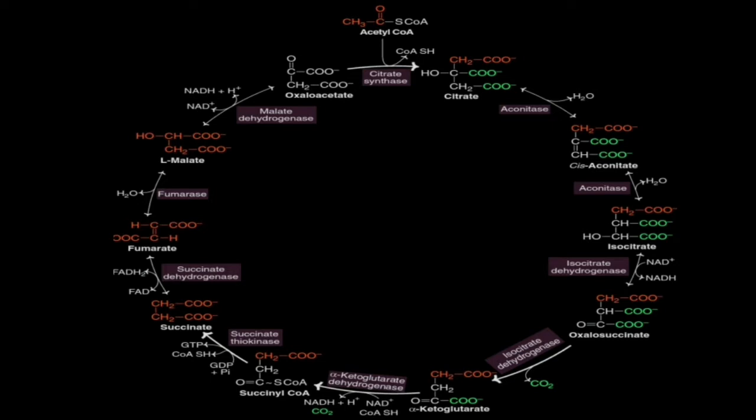The citrate formed is then acted on by aconitase in the next two reactions. Through release and addition of water, there is an intramolecular rearrangement that converts citrate into isocitrate. This isocitrate then undergoes oxidation catalyzed by isocitrate dehydrogenase.